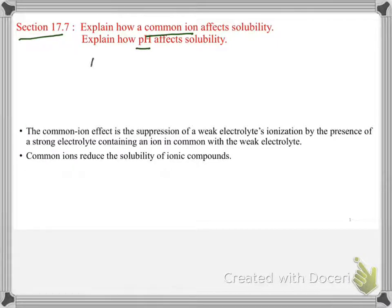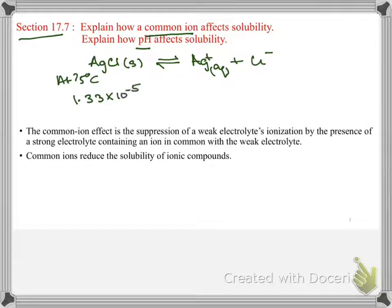Let's take the case of silver chloride. Consider a solution of silver chloride in pure water. So, aqueous and Cl negative. And at 25 degrees Celsius, the molar solubility of silver chloride is 1.33 times 10 to the negative fifth. Now, what happens? So this is in pure water.